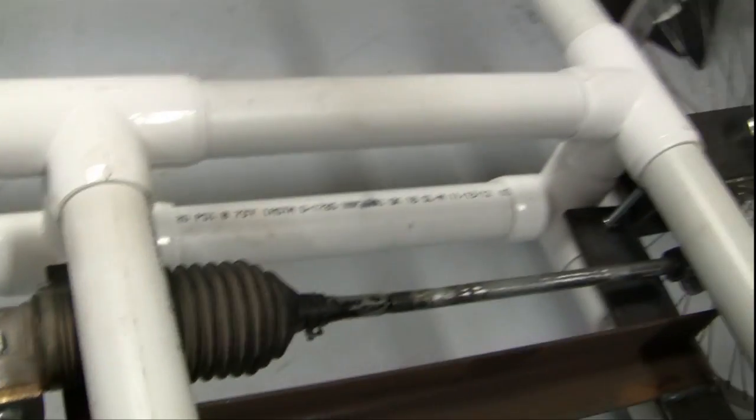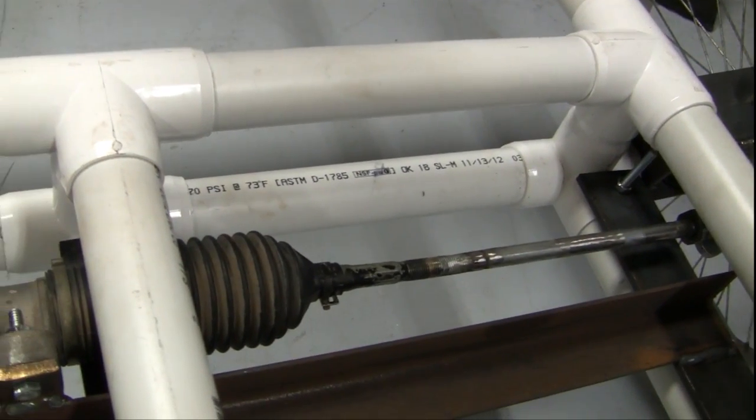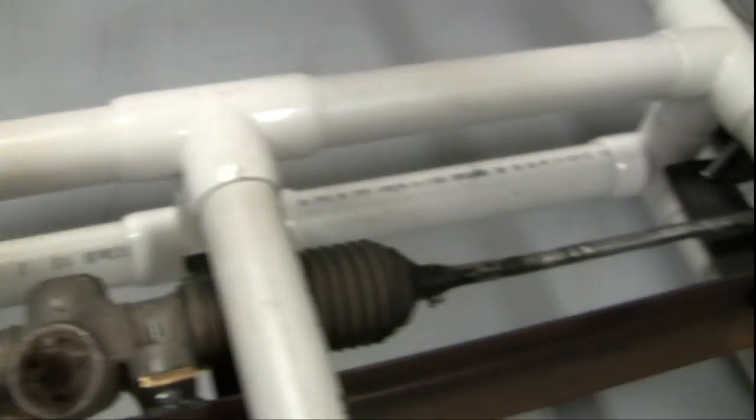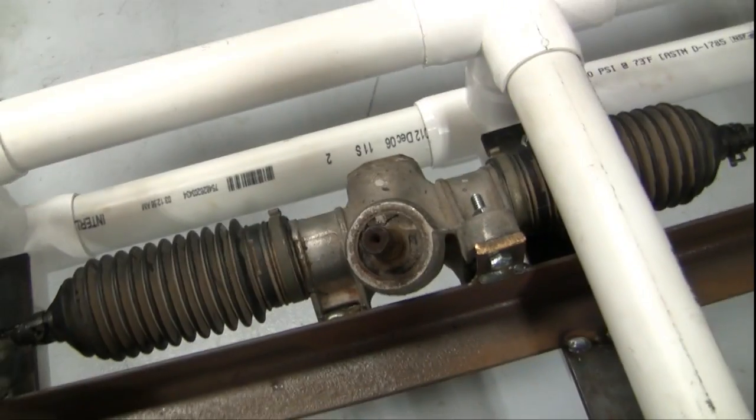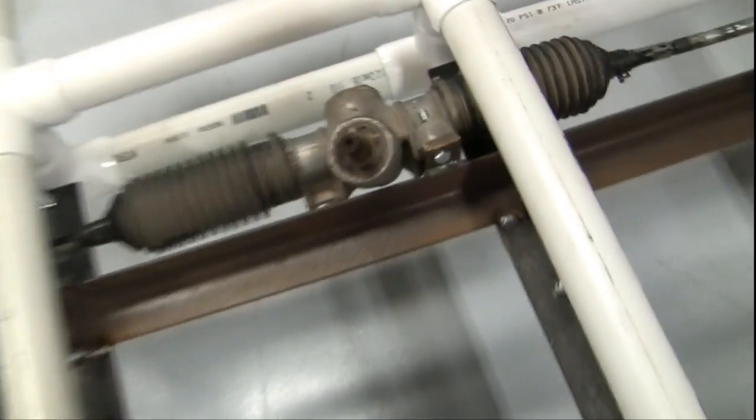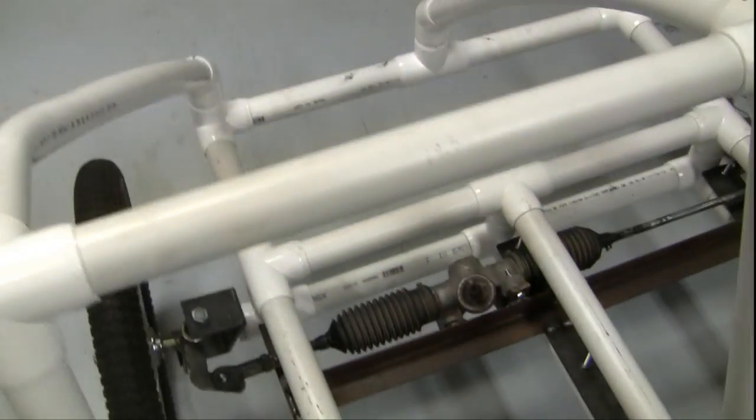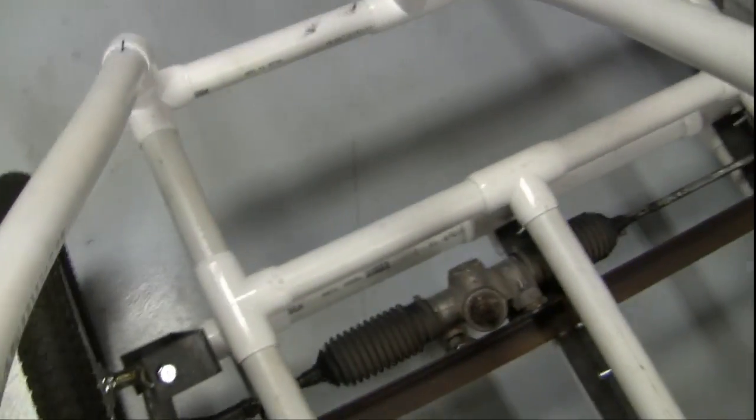And I'd have to make new control arms, because I don't think I can take these control arms off of this rack and pinion and flip them. So I'd have to cut them and start again, and that's not really an option. So I'm just going to move it to the right spot.